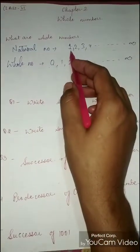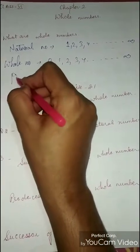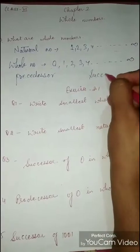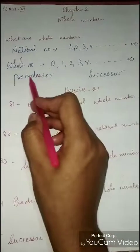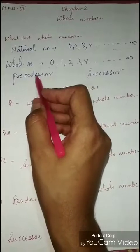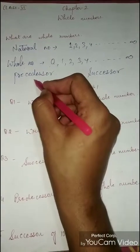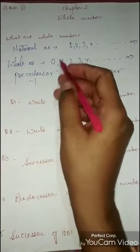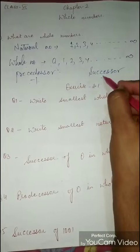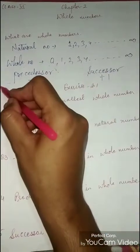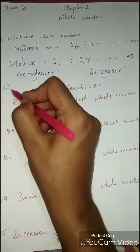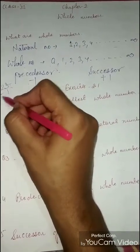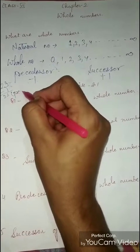In this chapter we will also study predecessor and successor. Predecessor means the number which is less than a given number by one - we subtract one. When we have to find the predecessor, we subtract one from the number. Suppose I have been given the number 23 and I am telling you to find the predecessor - we subtract one, so 22 is the predecessor.